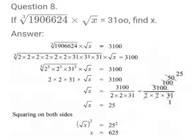So cubic root of 1906624 value is equal to 2 into 2 into 31.